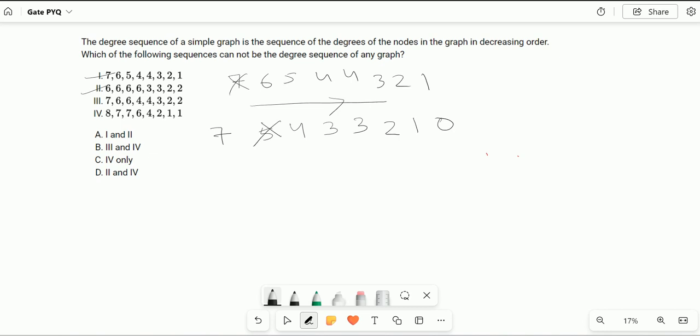Take out the first degree which is 5, so from the next 5 elements subtract 1. That is 3, 2, 2, 2, 1, 0, 0. Take out this 3, from next 3 elements subtract 1, that is 1, 1, 0, 0, 0.